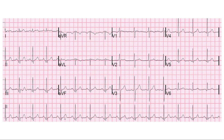Between the T wave and the QRS complex there is an isoelectric line called the ST segment. Any ST elevation or depression in the ST segment should be noted, as it denotes ischemia.